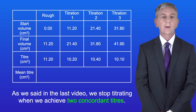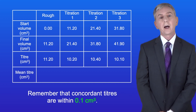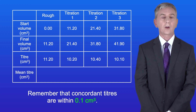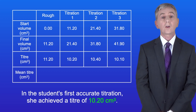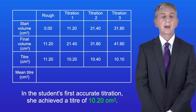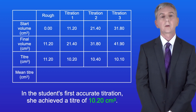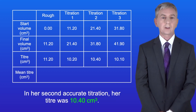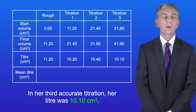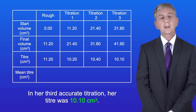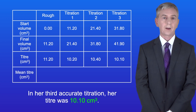As we said in the last video, we stop titrating when we achieve two concordant titers, and concordant titers are within 0.1 centimeters cubed. The student achieved a rough titer of 11.20 cm³. In her first accurate titration she achieved 10.20 cm³, in her second 10.40 cm³, and in her third 10.10 cm³.